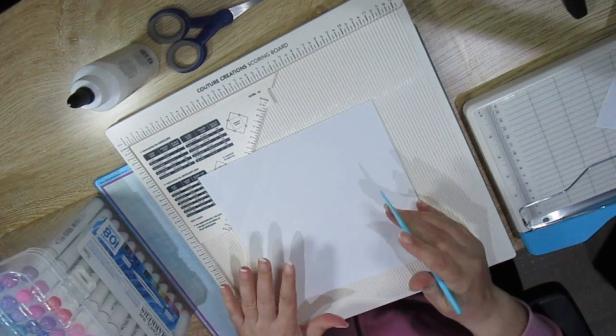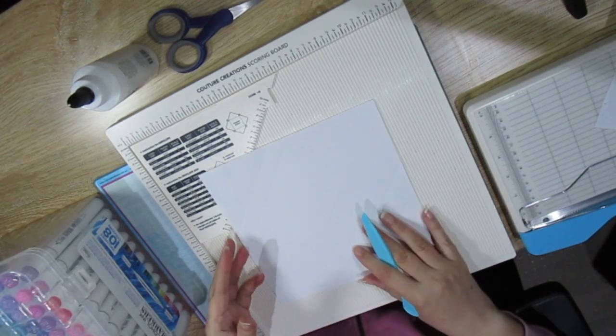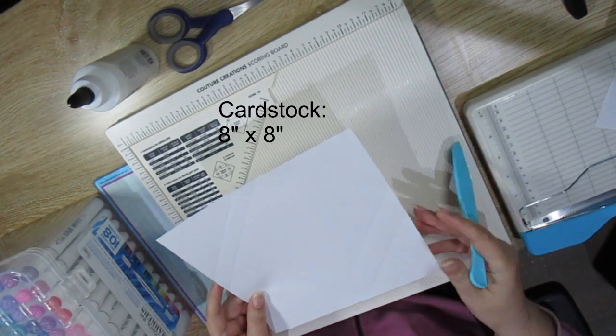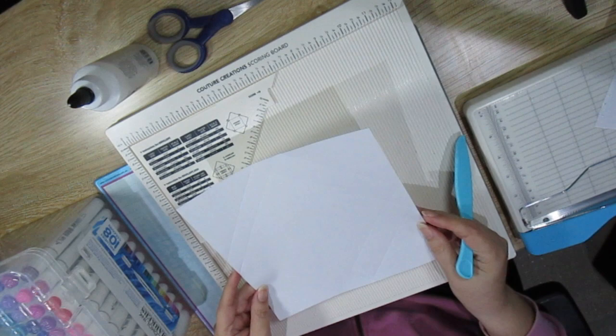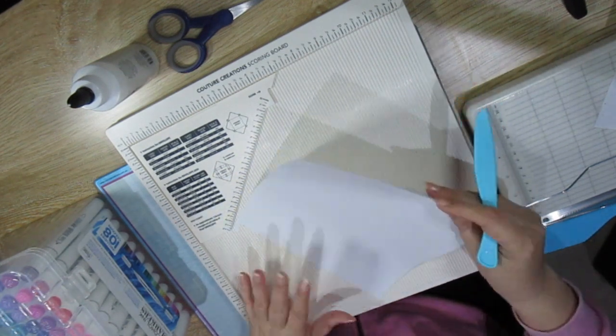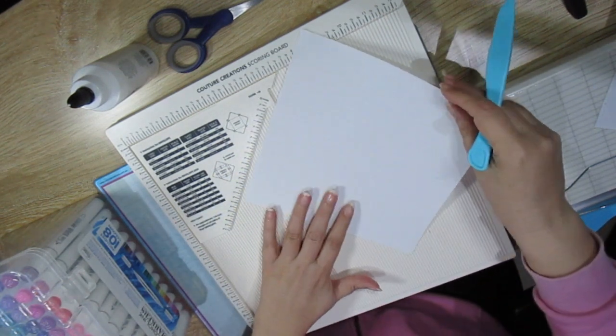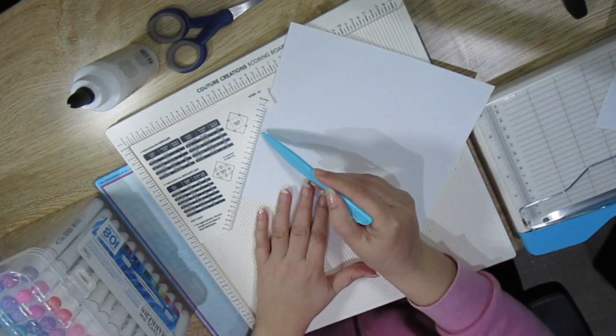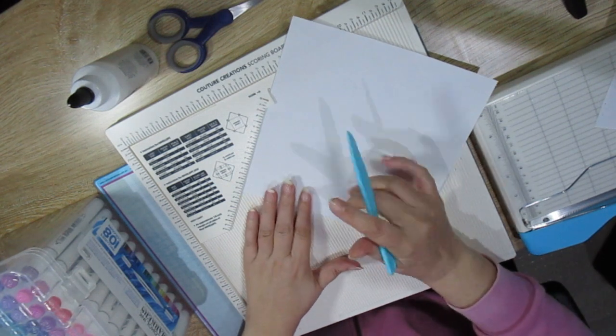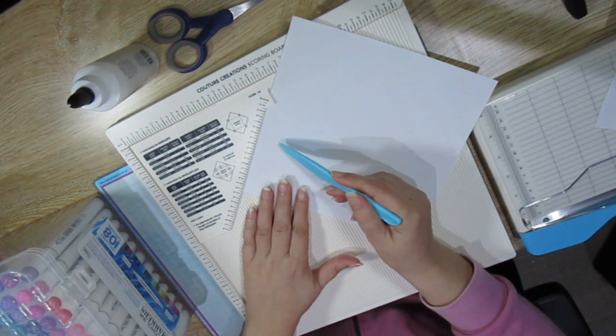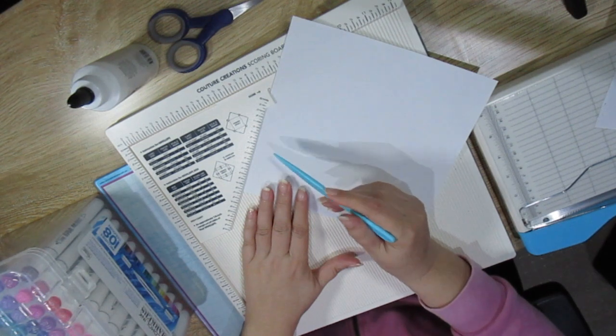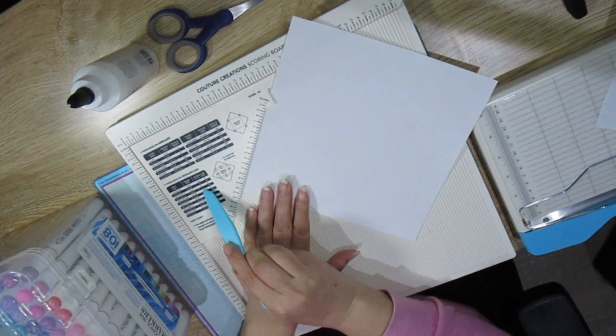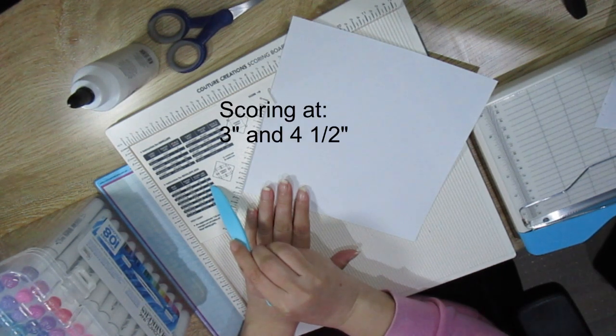For the envelope box card you will need a piece of 8 inches by 8 inches cardstock for the envelope. I'm placing the cardstock here onto the measurement plate. Because I'm using the 8 by 8 inch cardstock here on the envelope box measurements I will be scoring it at 3 inches and 4 and a half inches.